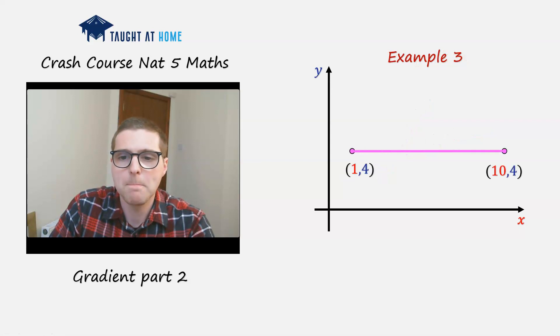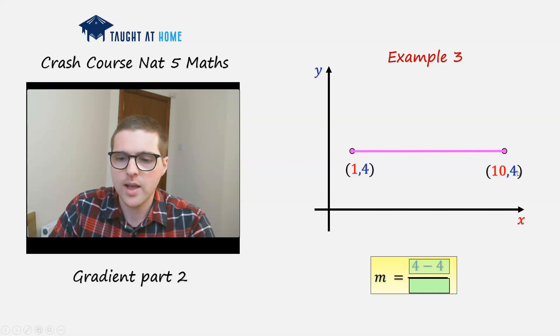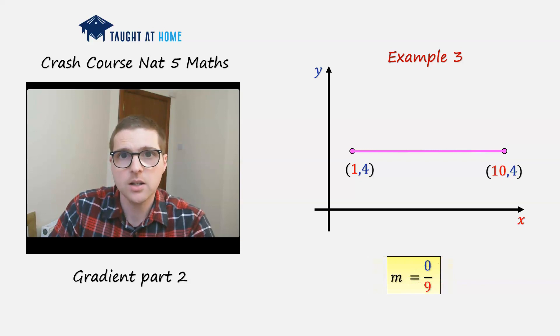Example 3, now we're given a straight horizontal line. The change here in y, there is no change because the y coordinates are the same. So m is going to be 4 minus 4 over 10 minus 1, and we're going to have 0 divided by 9. Therefore the gradient m is just 0. So a straight horizontal line, no change in y, the gradient is 0.